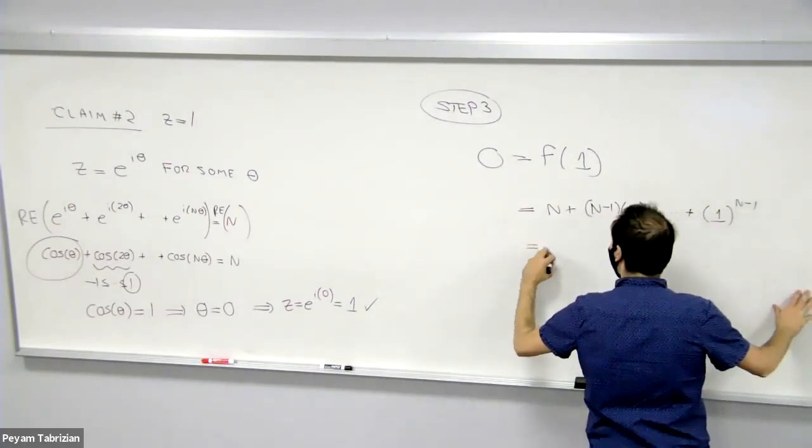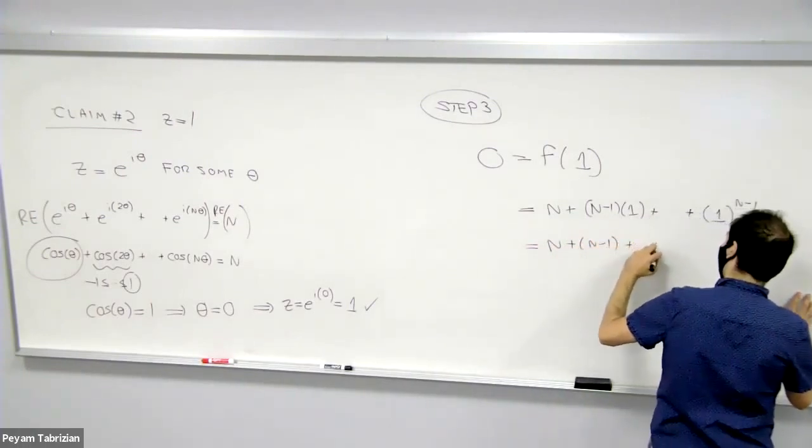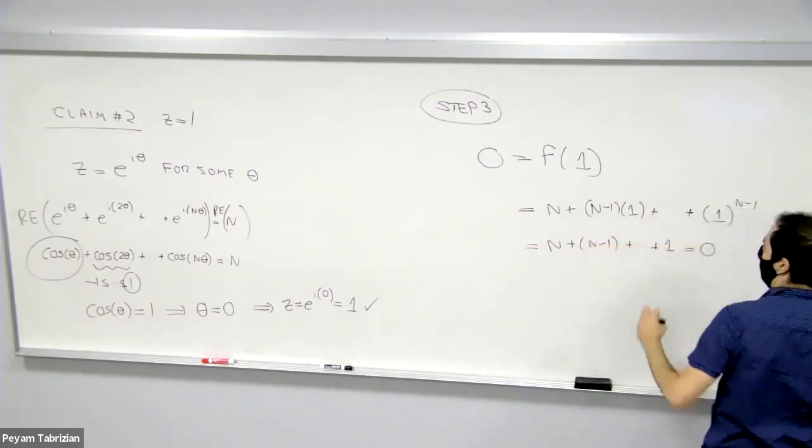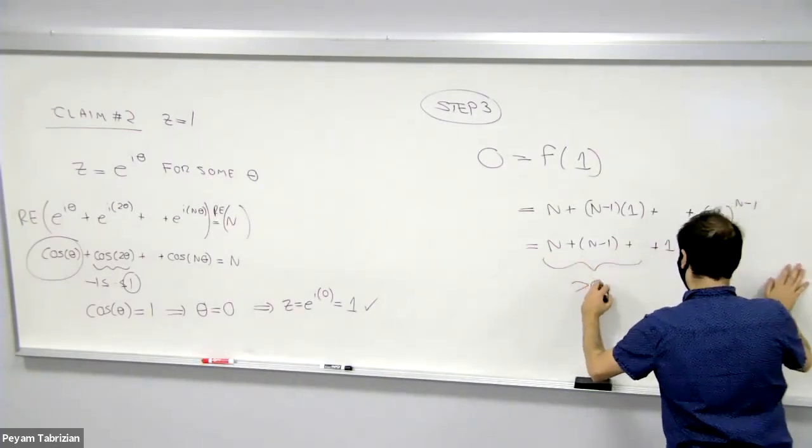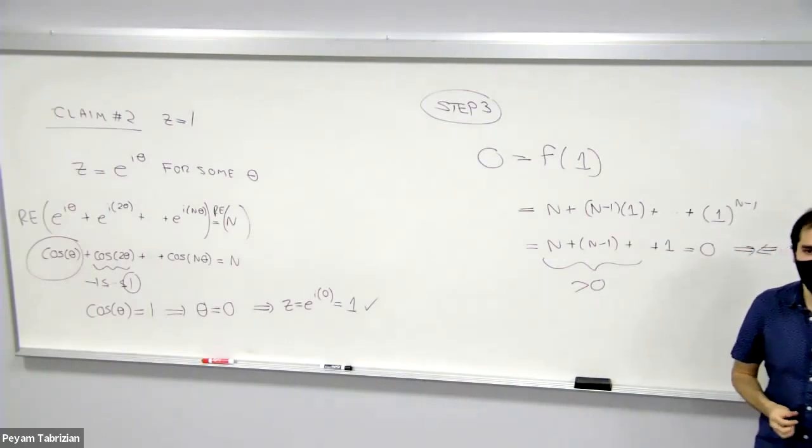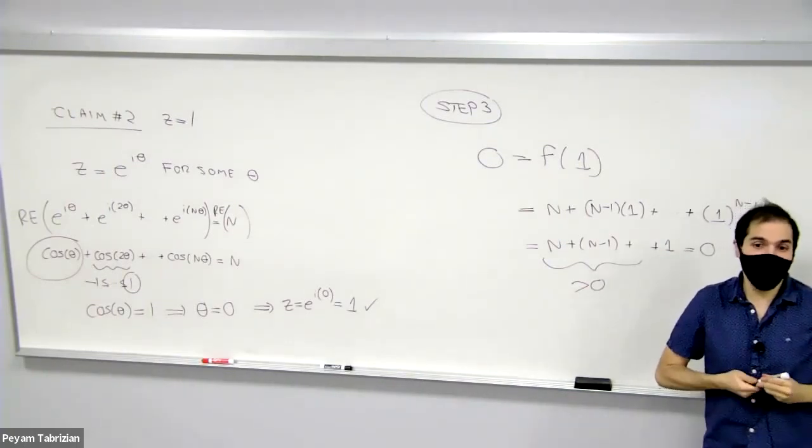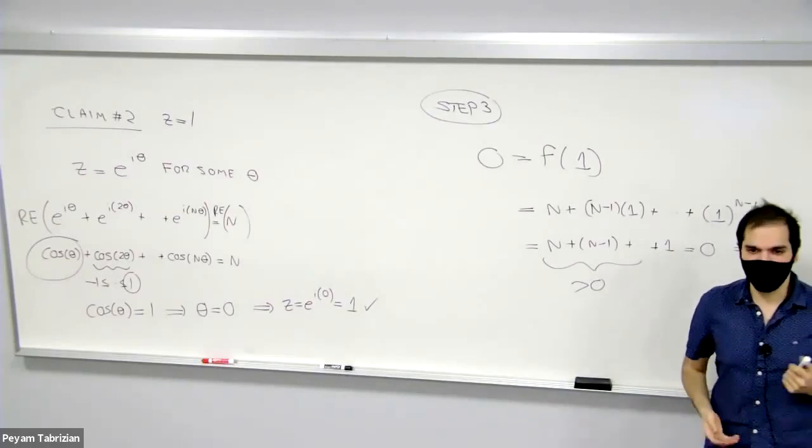So what we get is n + (n-1) + ... + 1 = 0. But that doesn't make sense because all those terms are positive. So a bunch of positive terms, they can't add up to 0. So that's a contradiction.